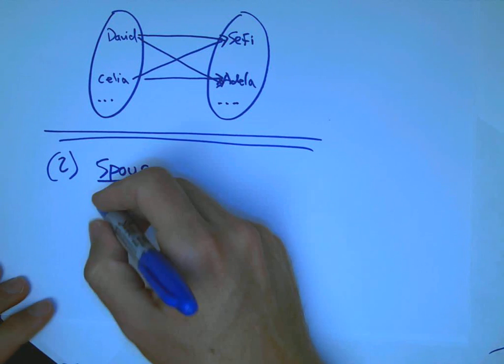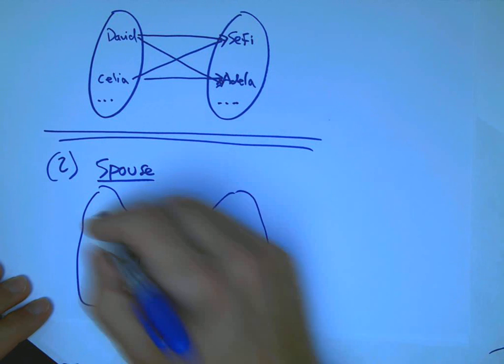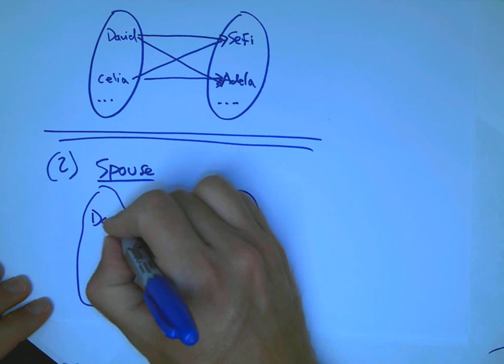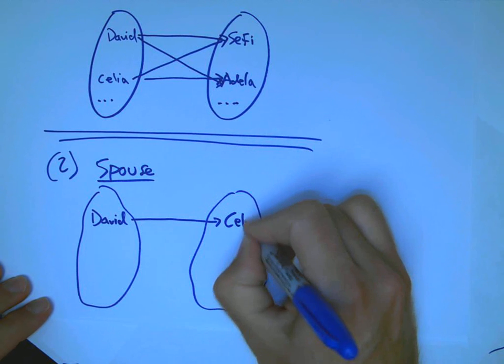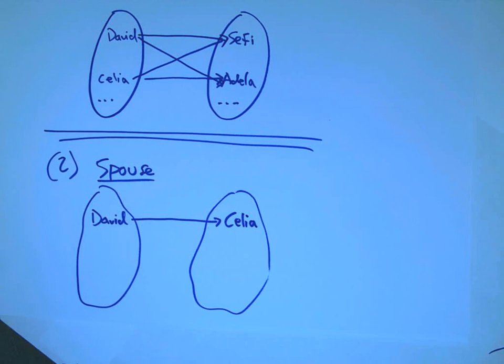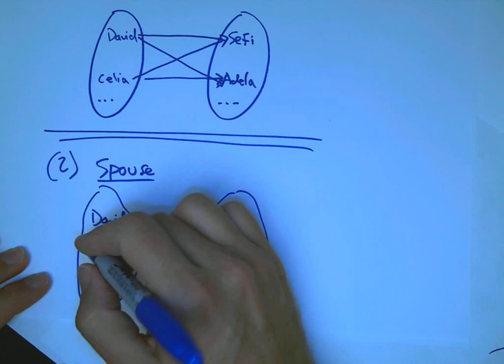Now, what about the spouse relationship? Keeping with people, the spouse relationship. So, let's see, here's, who is the spouse of David? Well, there is only one. That's my wife Celia.